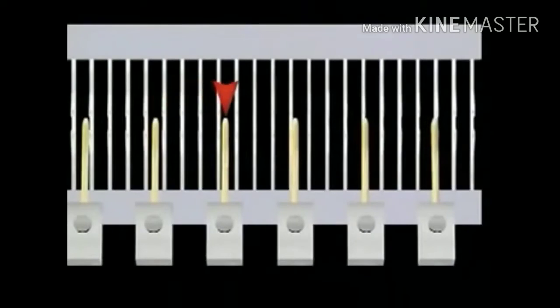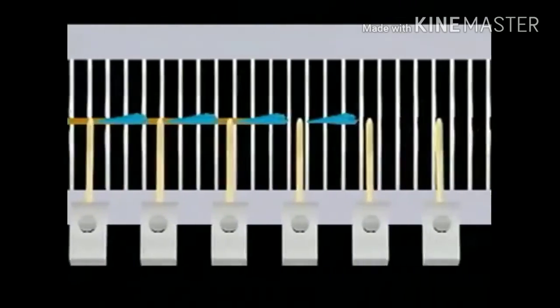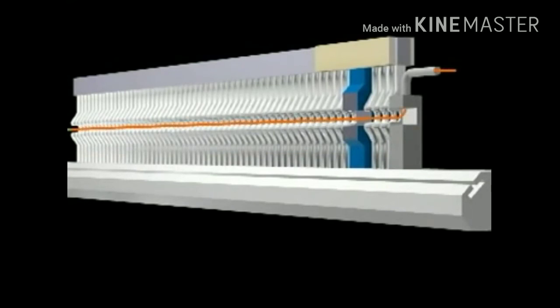Relay nozzles located across the width of the reed control the weft in the reed tunnel during insertion. When the weft reaches the right side of the reed, additional relay nozzles, or an optional stretch nozzle, secures the weft under tension until the shed closes.